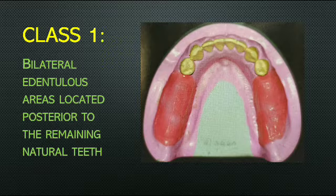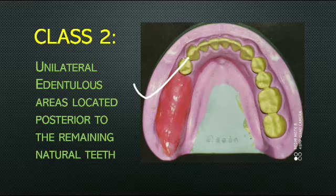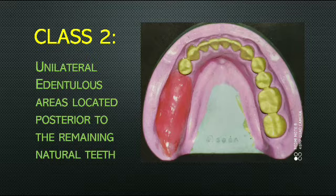Class two is unilateral edentulous areas located posterior to the remaining natural teeth. This is very similar to class one, but instead of being bilateral, the edentulous space is present on only one side. To remember the difference: after one comes two, so in class one there are edentulous spaces on both sides — bilateral — and in class two you are left with a unilateral edentulous space.